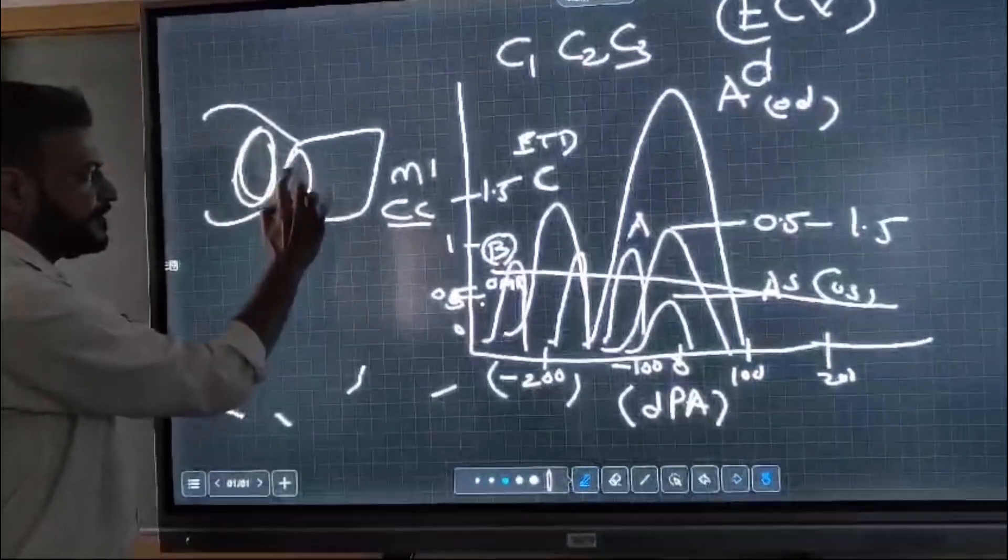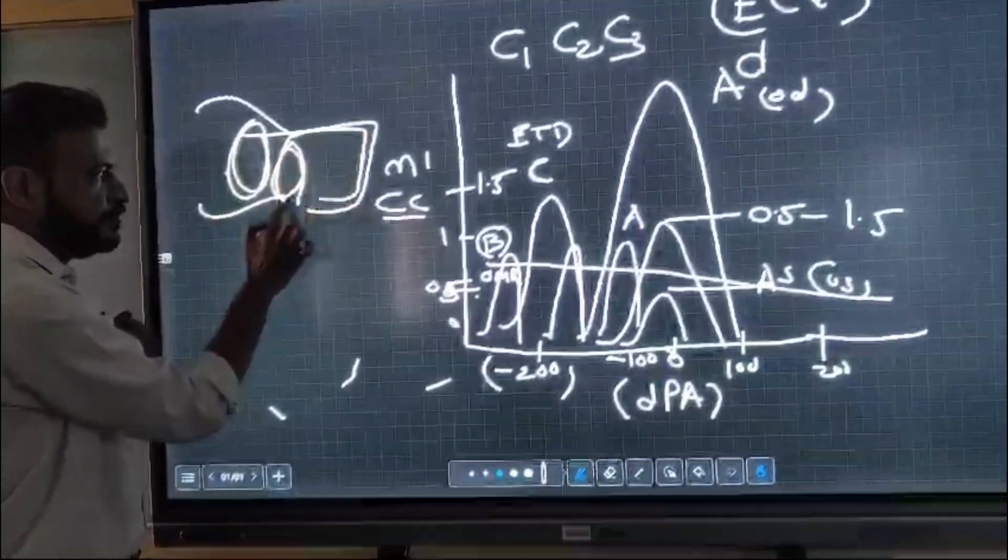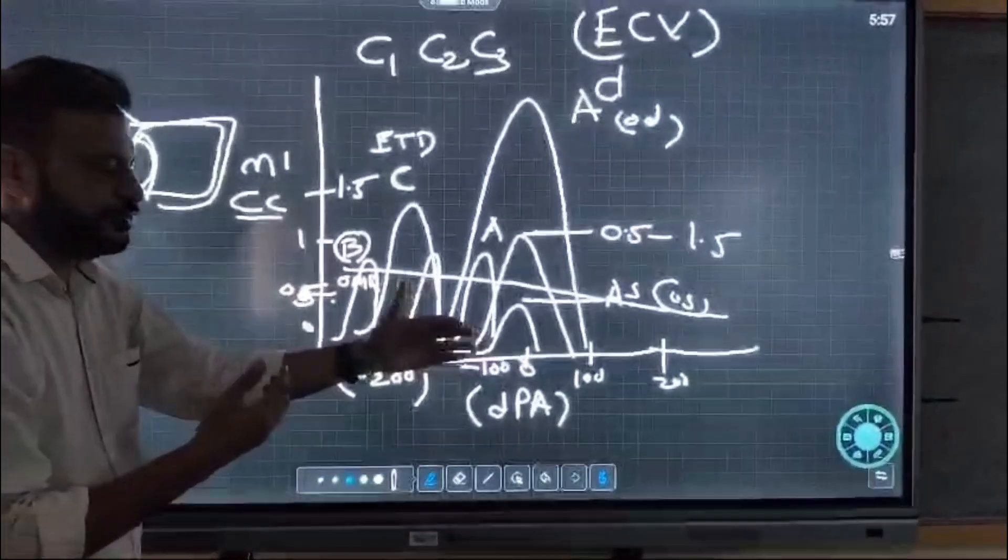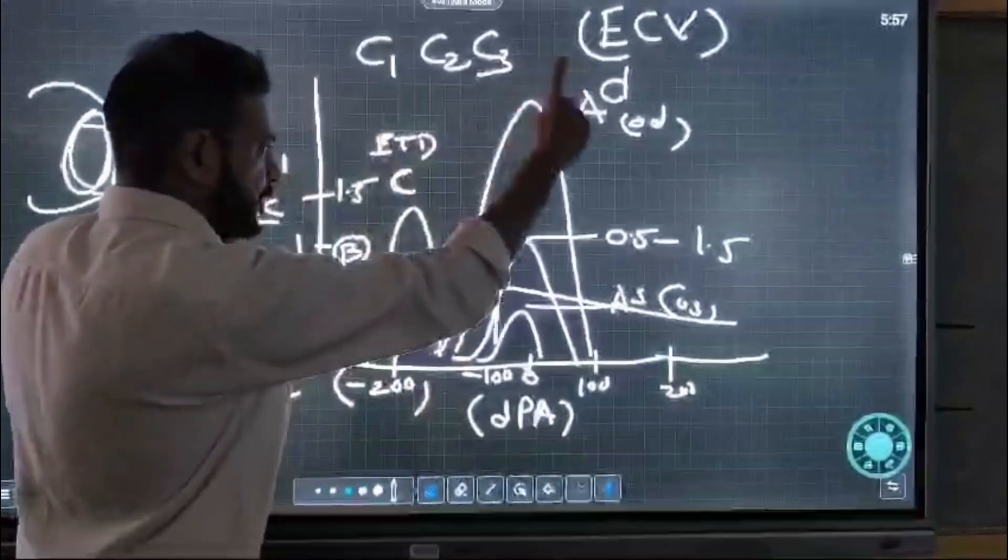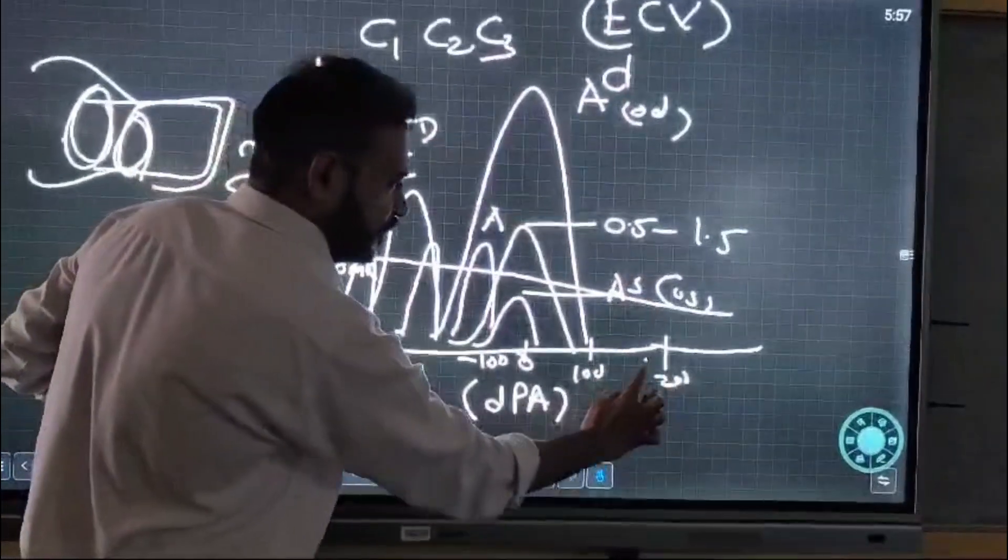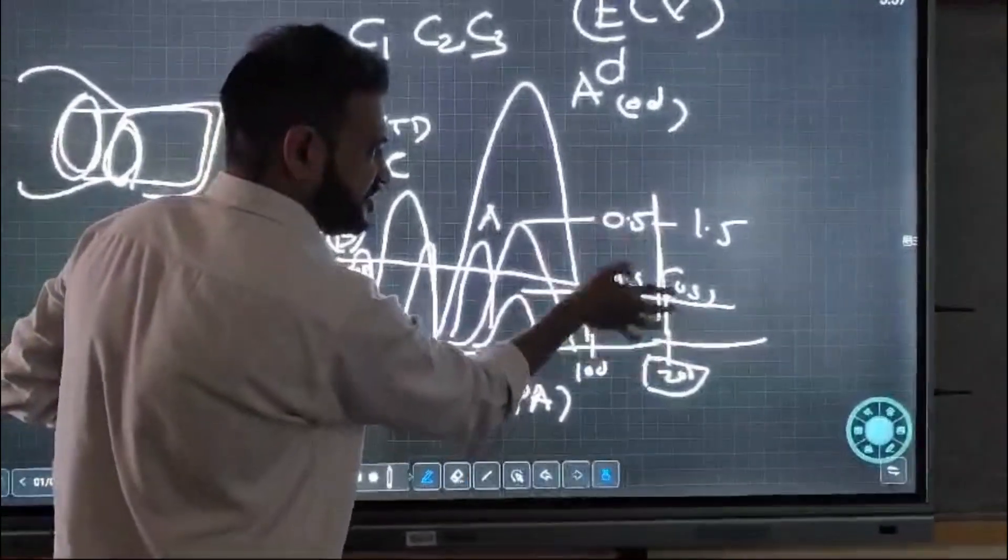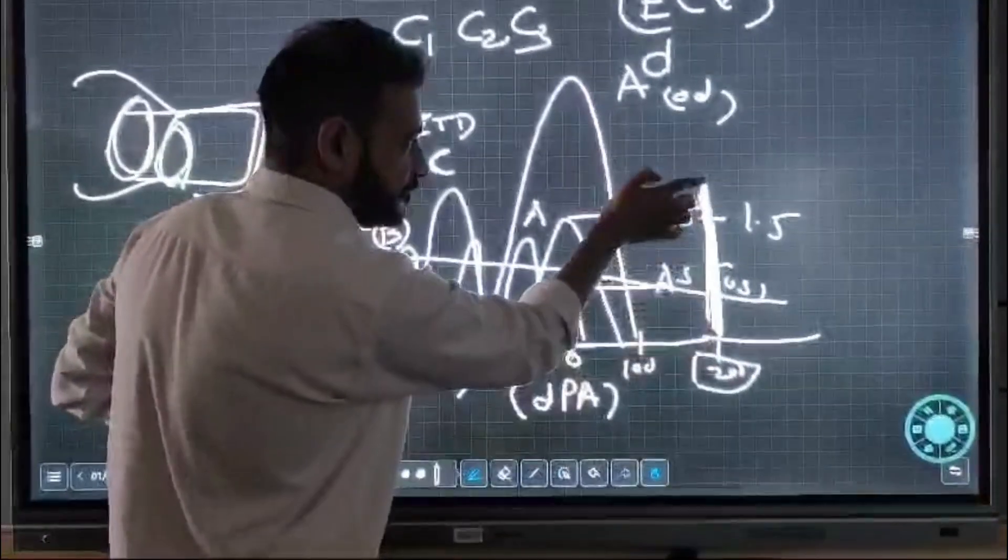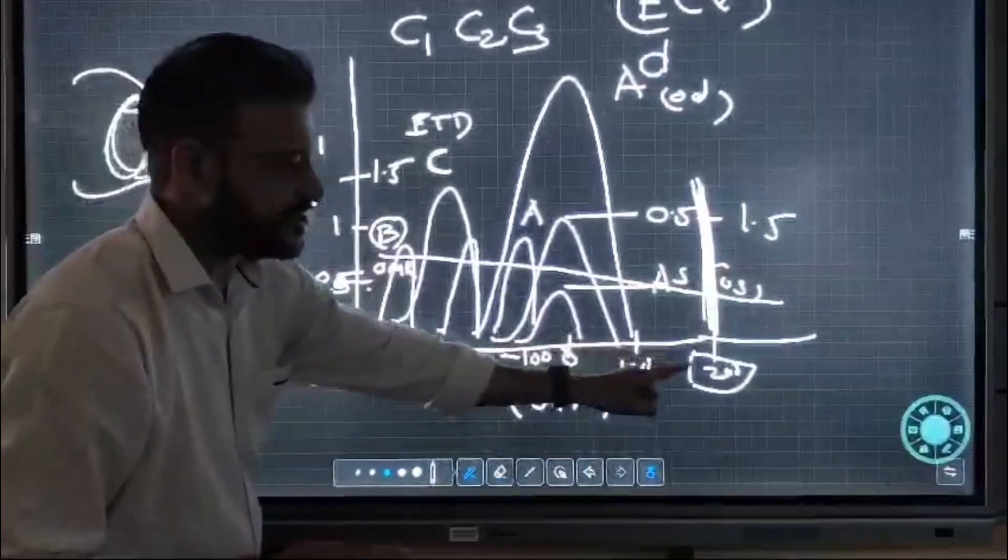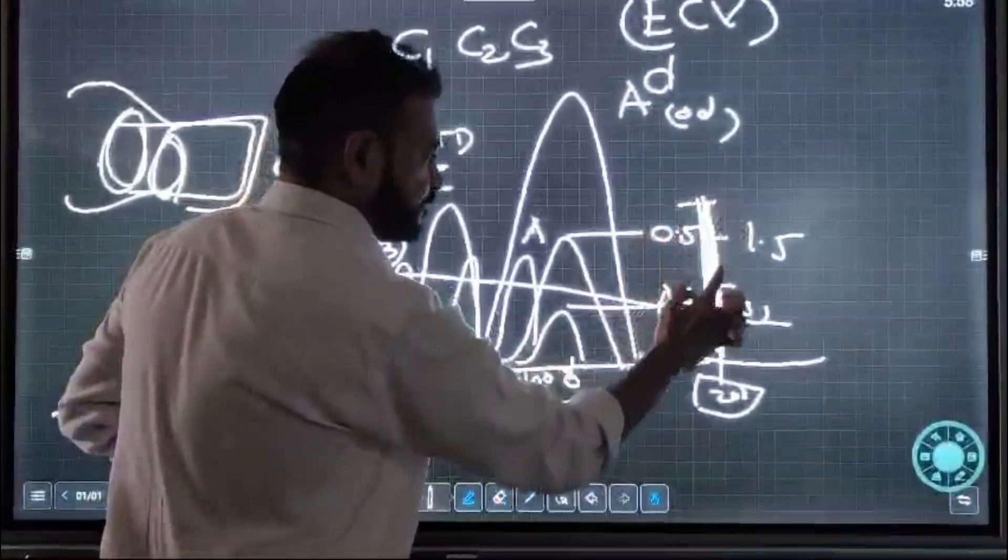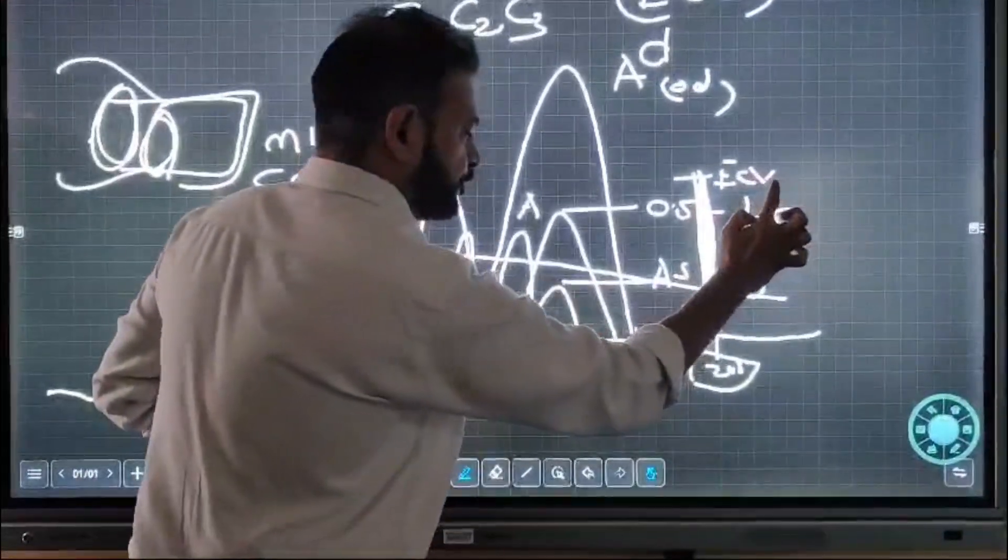If there is a perforation, the volume will be more. Where does a tympanogram show the volume? At the level of plus 200 decapascals, you will find a bar which shows the external canal volume.